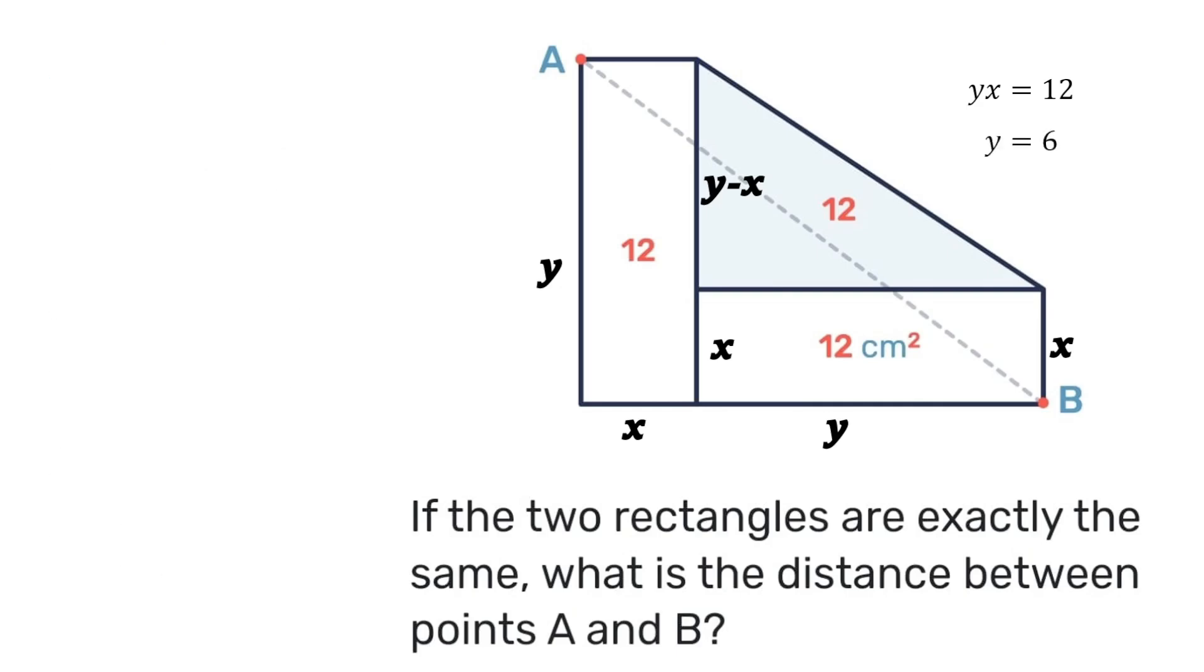Next can we find the value of x? Well we know that y times x is 12 so then 6 times x is 12 which means x will be 12 divided by 6 which gives us that x is 2. Let's hold on to that as well.